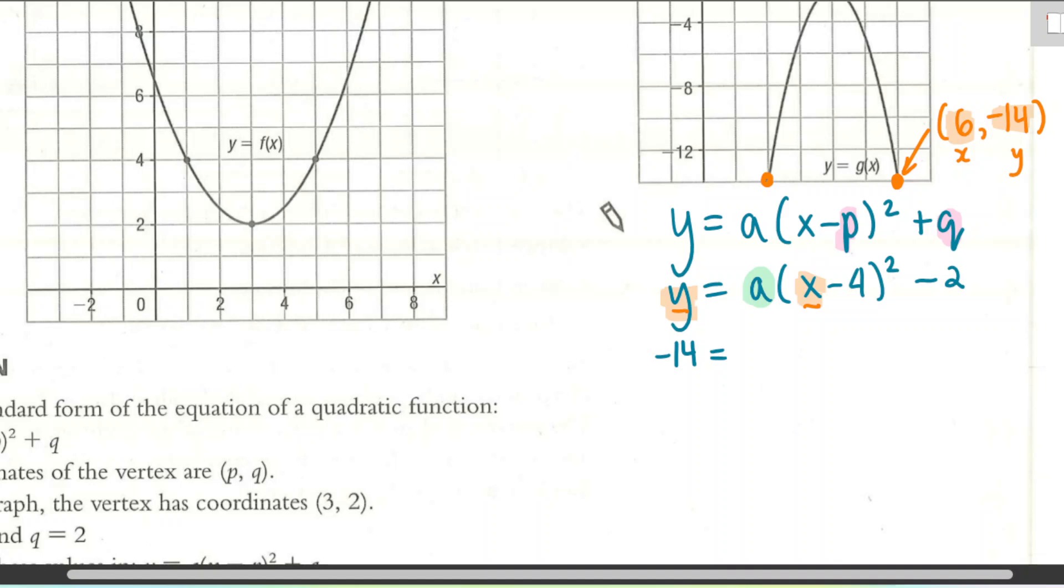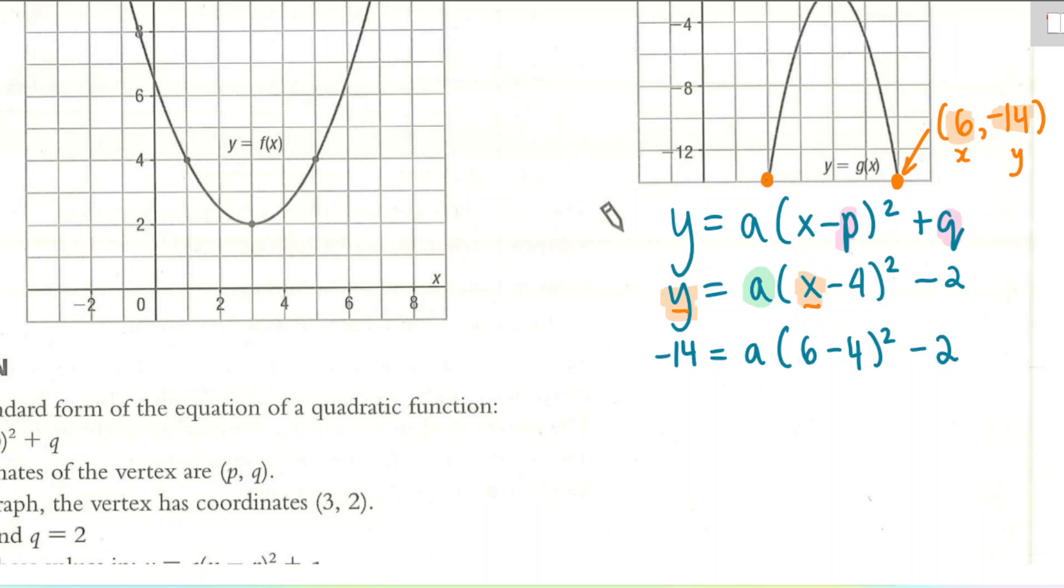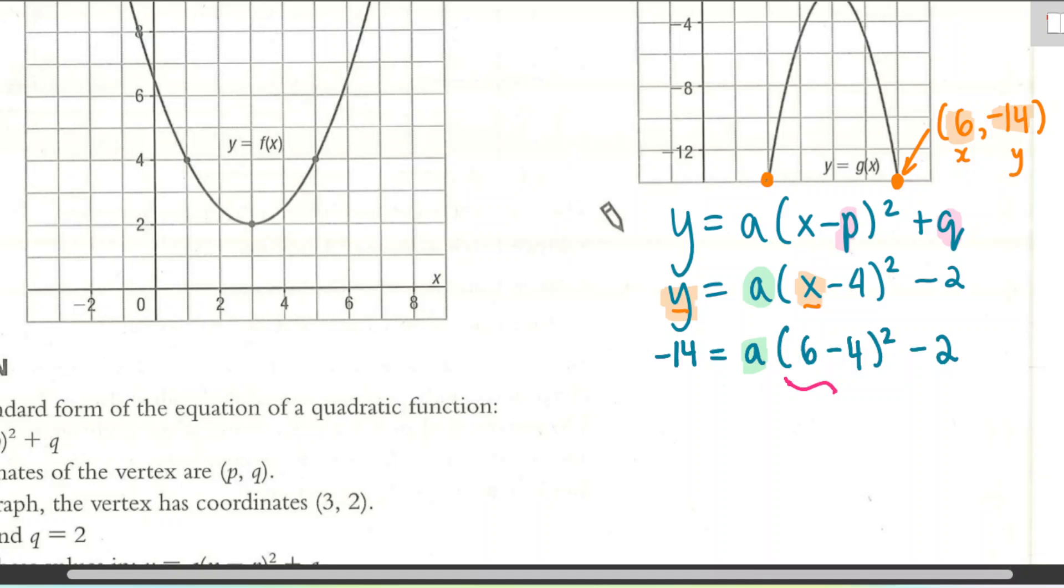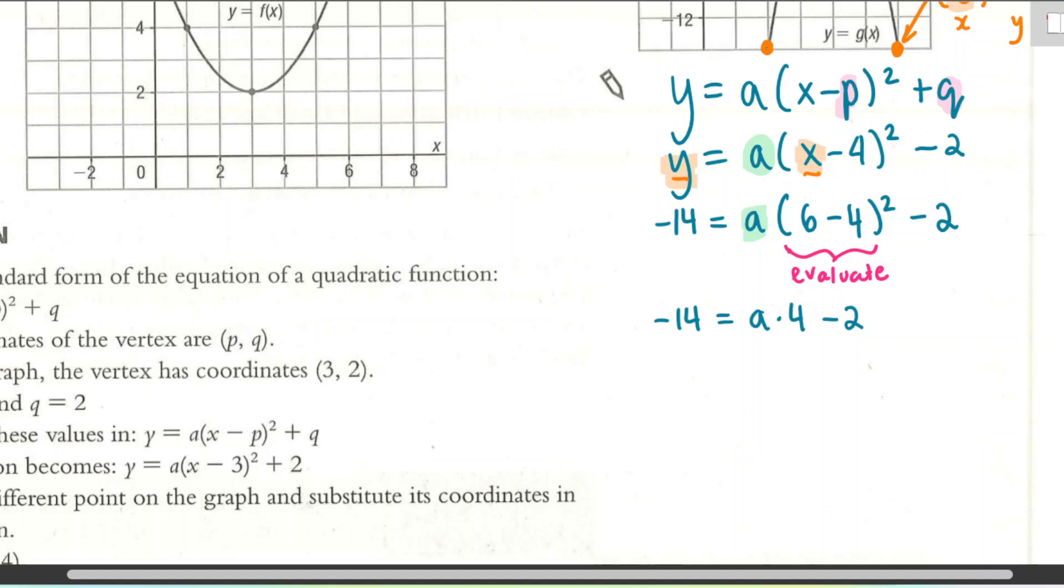So I'm going to go ahead and replace the y with negative 14 and the x with 6. I'm going to now solve for A, which I'm highlighting in green. So first thing I'm going to do is just evaluate this bracket here, just to clean this up a little bit. So I'll have negative 14 equals A times, so 6 minus 4 all squared would be 4. And now I'm going to isolate for A just by doing some opposite operations. So I'm going to add 2 to both sides. It's going to cancel it out on the right-hand side. And I'll have negative 12 equals A times 4. And I'm going to divide by 4. So I'll have negative 3 equals A.